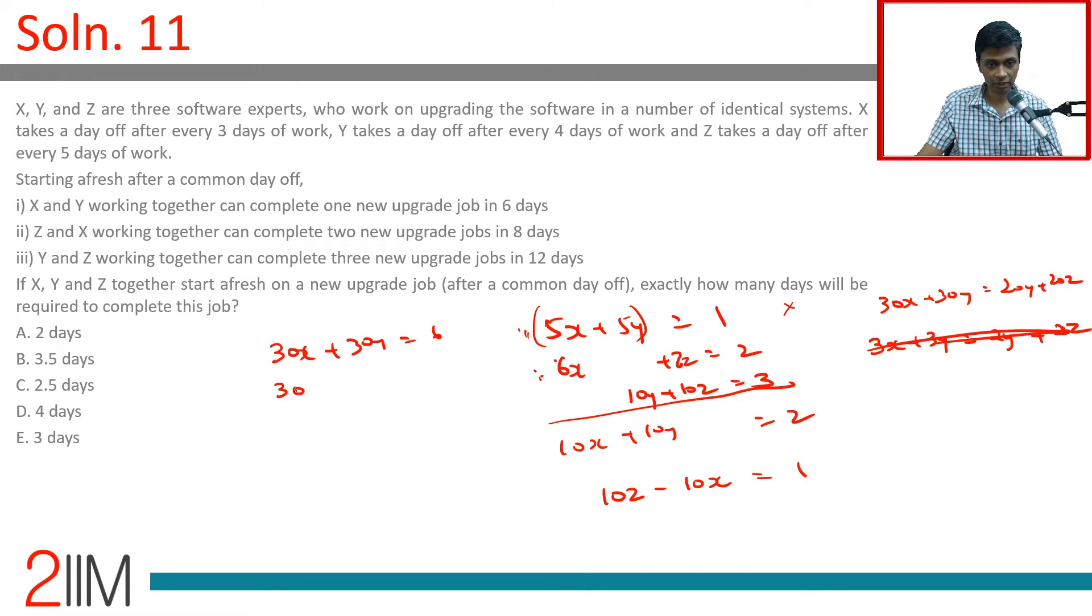Multiply this by six: thirty X plus thirty Y is six. Multiply this by five: thirty X plus thirty five Z is ten. X goes away. Thirty five Z minus thirty Y is four.